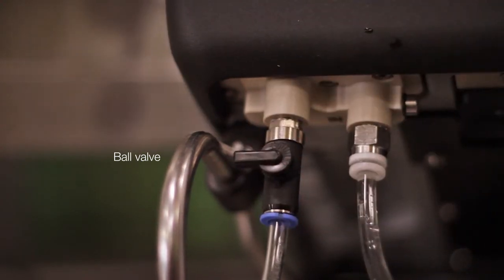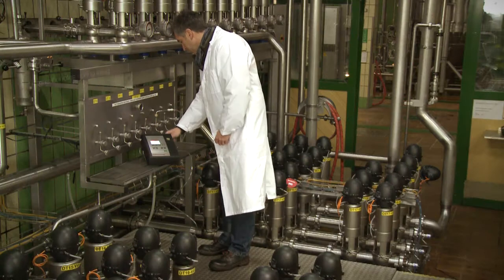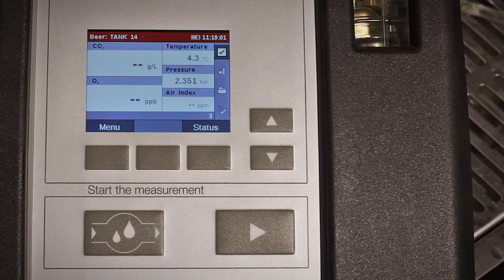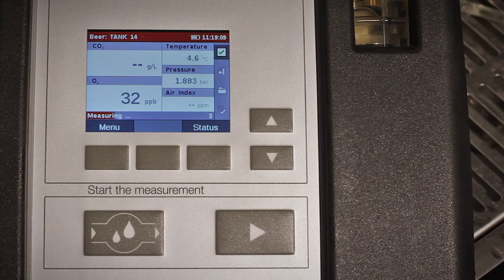Close the ball valve at the sample outlet and make sure that the measuring chamber is free of bubbles. Without stopping the rinsing process, press the START key in order to initiate the measurement.